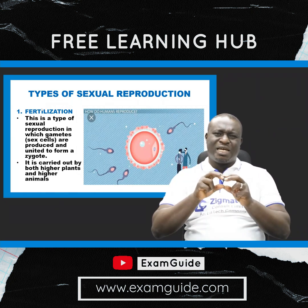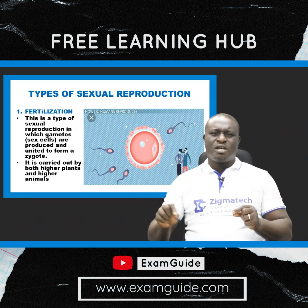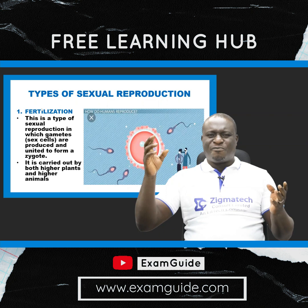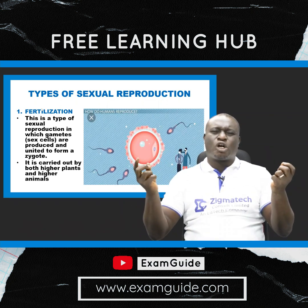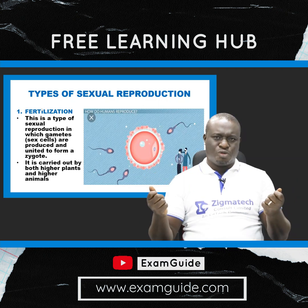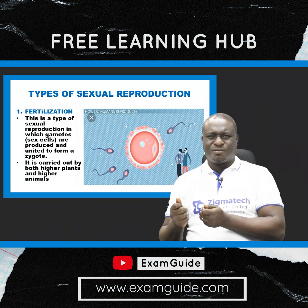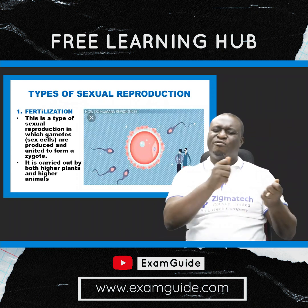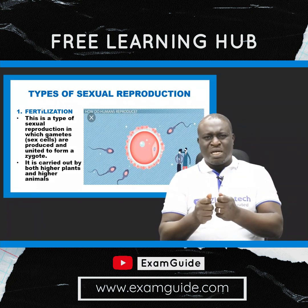Please take note: each of the sex cells — the male sex cell, which is the spermatozoa, and the female sex cell, which is the egg cell — each of these sex cells possesses a nucleus, and the nucleus possesses chromosomes. In fact, reproduction is interrelated with genetics, because the formation of new offspring also involves the transfer of traits from parents to their offspring.